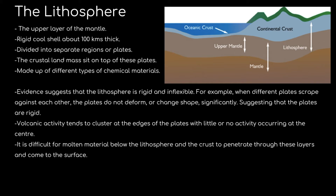Volcanic activity tends to cluster at the edges of the plates, with little or no activity occurring at the center. It is difficult for molten material below the lithosphere and crust to penetrate through these layers and reach the surface, which is why we don't have so much molten magma on the surface of the Earth.